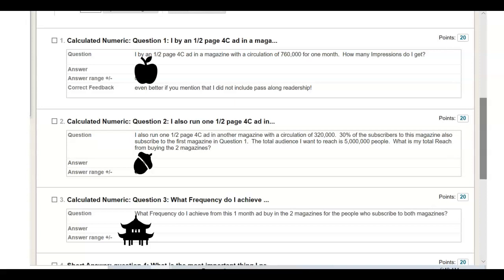These are the three questions. I buy a half page four color ad in a magazine with a circulation of 760,000 for one month. How many impressions do I get? I also run another half page four color ad in another magazine with circulation of 320,000. Thirty percent of the subscribers to this magazine also subscribe to the first magazine in question one. The total audience I want to reach is 5 million people. What is my total reach with the two magazines?